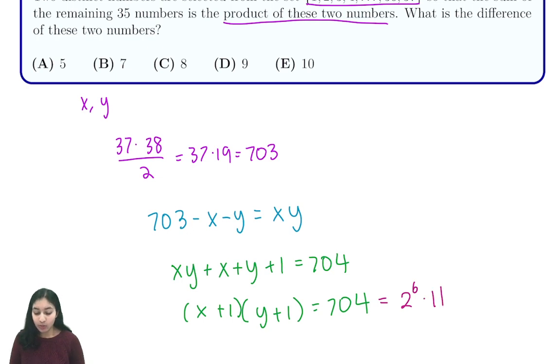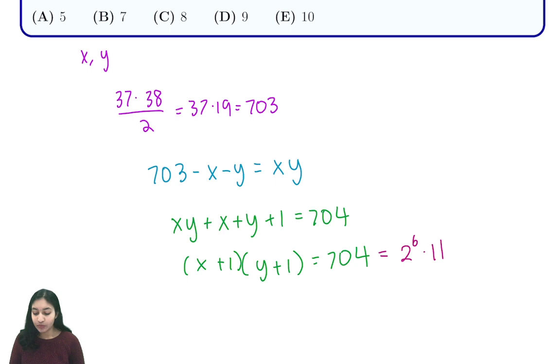So when you write out some possible pairs that could multiply to 2 to the 6 and 11, you might have 2 to the 4 times 44, or 2 to the 5 times 22, or 2 to the 6 times 11, and many others.